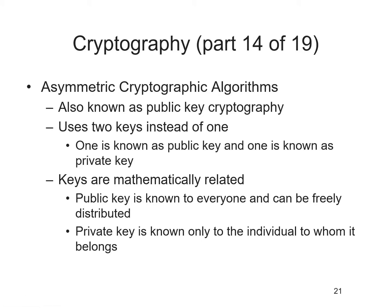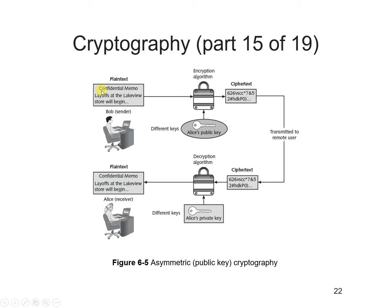Asymmetric cryptographic algorithms, also known as public key cryptography, use two keys instead of one. One key is public, to be shared with everyone with no harm, and one is a private key kept with the person using it. Keys are mathematically related. For example, if Bob is trying to send a document, he'll use his private key and Alice's public key to encrypt the document and send it to Alice.